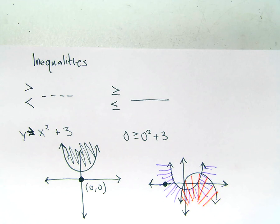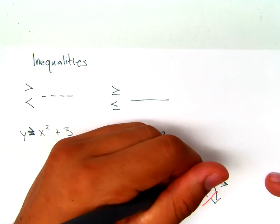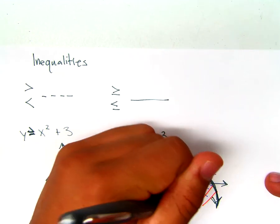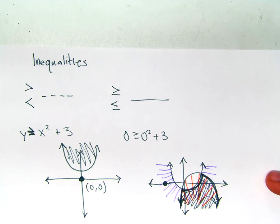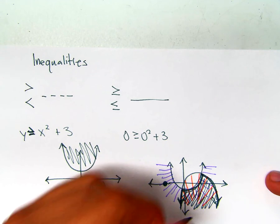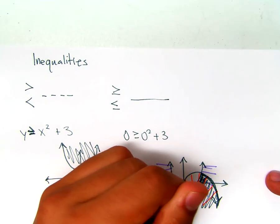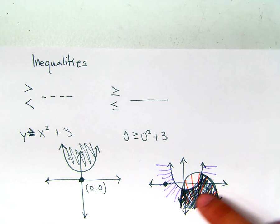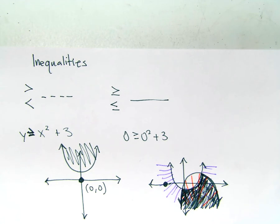Where would our solutions lie? Where both of the shades meet — in this area here, where both shades overlap. Understanding that, you'll just be asked to find two solutions. If we wanted to find two solutions, we would just pick two points in this area. This is just a quick review because it's very similar to what we did when we had linear inequalities. If you need a reminder on how to shade or the process, this is the same process — we're just applying it to quadratics. You should still have those notes.